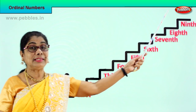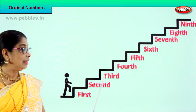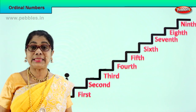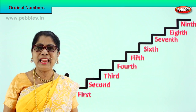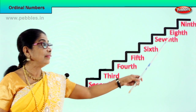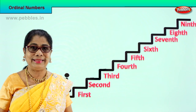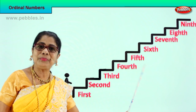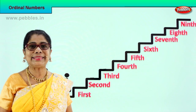When he reaches the last step, what will you say? He is on the ninth step. When he reaches here, you say he is on the third step. Third. Now that we have learned first, second, third, fourth, fifth, sixth, seventh, eighth, ninth, let us do some exercises to remember these ordinal numbers.